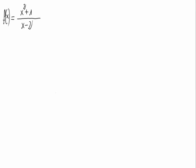Given the function f of x equals x squared plus 1 divided by x minus 2, let's calculate its oblique asymptotes. We have a function that has an oblique asymptote — that's a straight line that is not horizontal nor vertical, so that the function gets close to this line but without touching it.